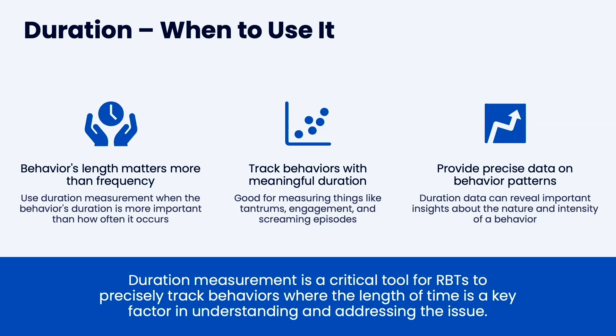When the length of time matters more than the frequency, use duration. It is actually the most complete way to take data because when you start and stop the stopwatch, you also get frequency — you can just count each start-stop as one instance. So you get both frequency and duration together. It's good for behaviors like tantrums, engagement, and screaming, and it provides the most precise data on behavior patterns.